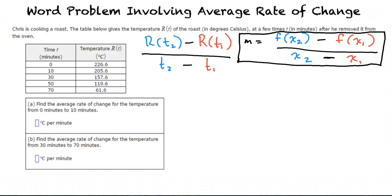Why did you write T instead of x? Isn't x always supposed to be in the function? In a graph, there always is an x-axis and a y-axis, but we can replace x with T and y with R if we want to. We just have to make sure they correspond correctly. So T is like x and R of T is like y. That means the values on this table are like points on a graph. Exactly. Now to find the two average rates of change, we will substitute in the corresponding points.